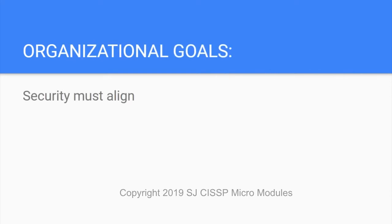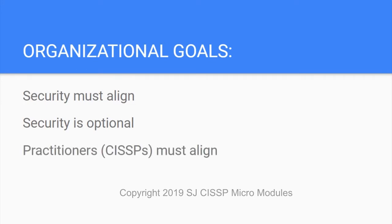Some points of interest on organizational goals: security must align with the organizational goals, not dominate or drive them. Security is optional — it's a support function. Remember that security and the budget that funds it can be done away with at any time. Security practitioners must align with organizational goals as well; it helps to keep costs down and helps the security program serve the organization properly.